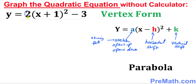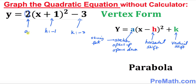So 2 is our 'a'. In this case, 'h' is going to be negative 1 — you have to watch out because there's a negative sign versus a positive sign when comparing to the standard form. And our 'k' is going to be negative 3. So keep in mind: a equals 2, h equals negative 1, k equals negative 3. By the way, this quadratic equation is also called a parabola.